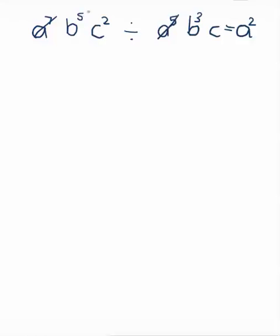Next, b to the power of 5 and b to the power of 3: 5 take away 3 is 2, so b to the power of 2. And for c, we have c to the power of 2 and c with an invisible power of 1. So 2 take away 1 is just 1, giving c to the power of 1. Remember, the power of 1 is invisible, so we just write c. And that will be our answer.